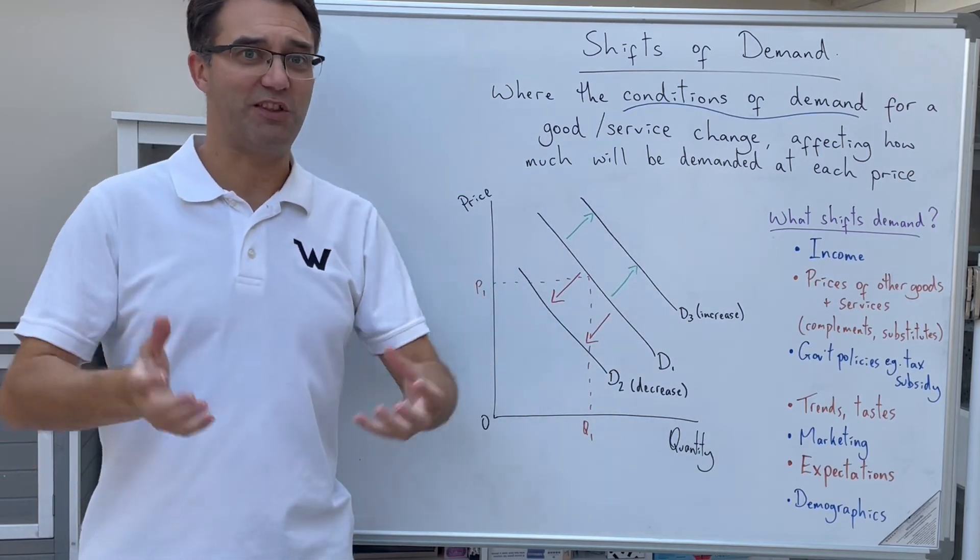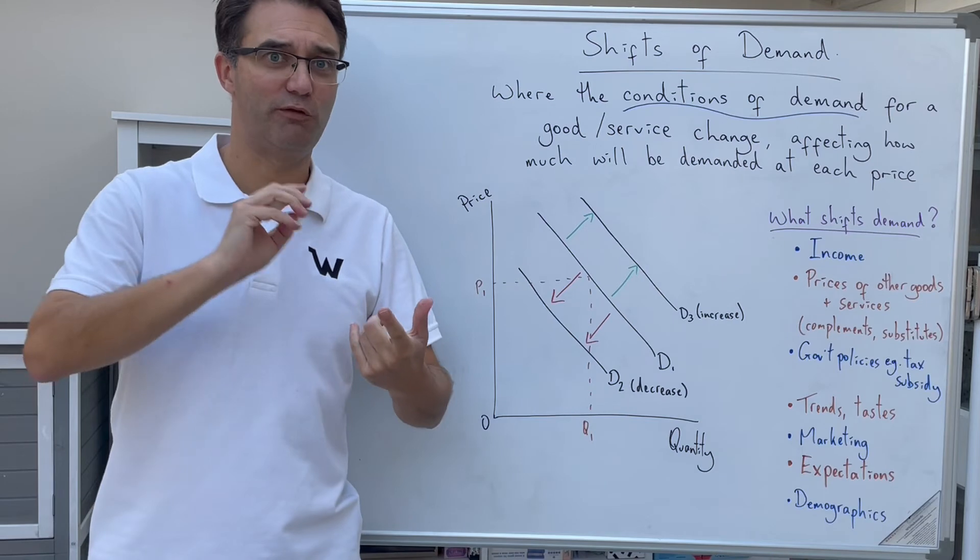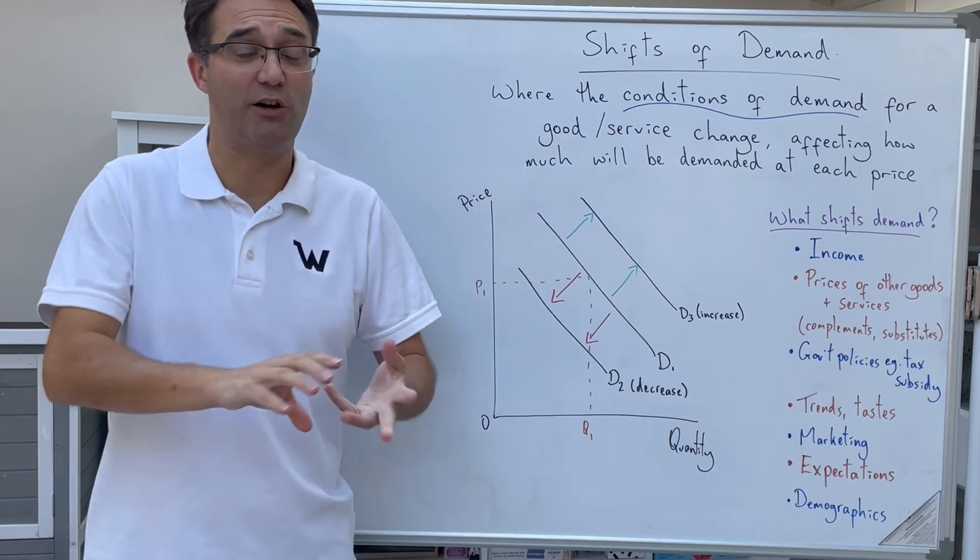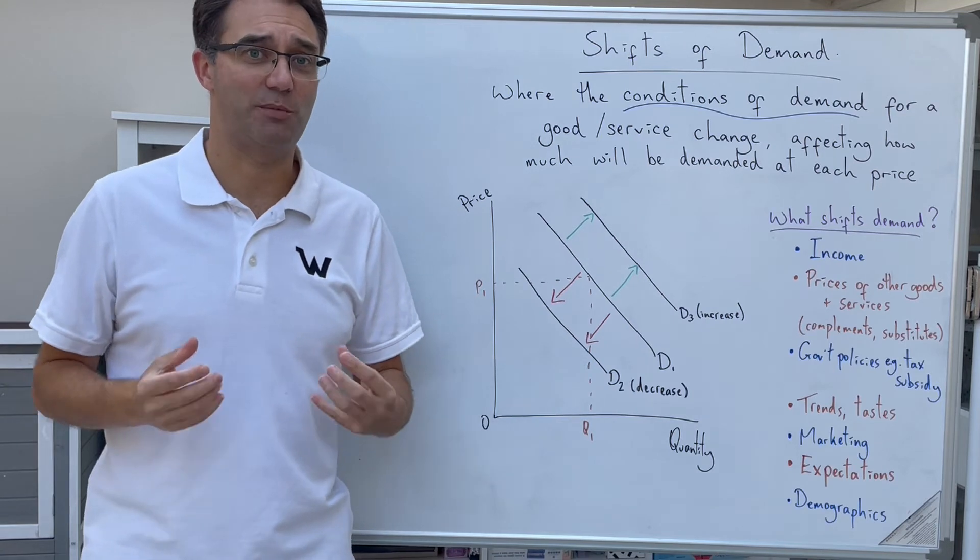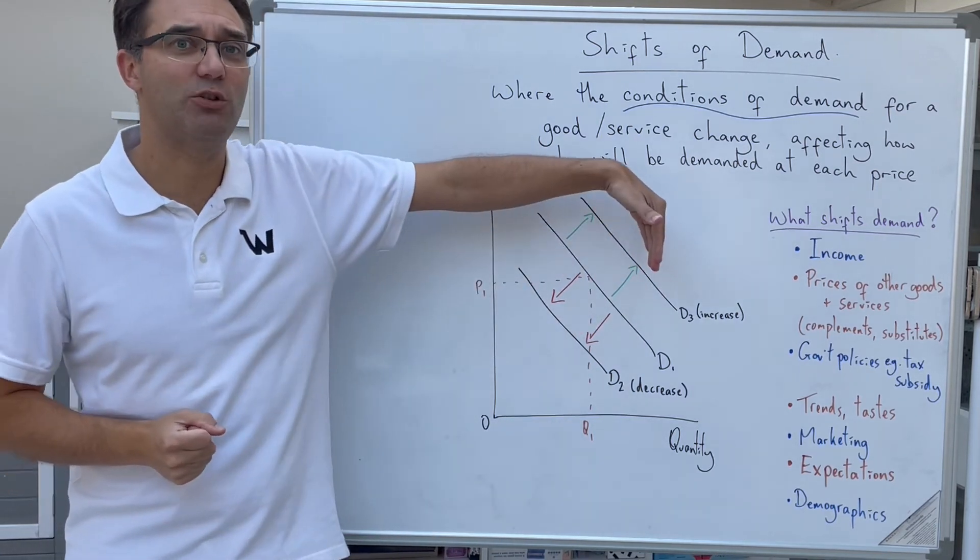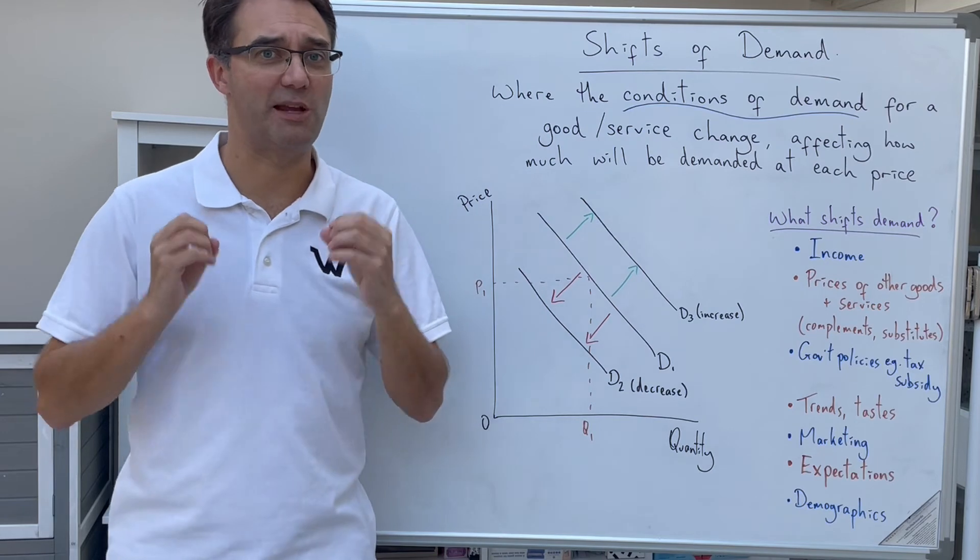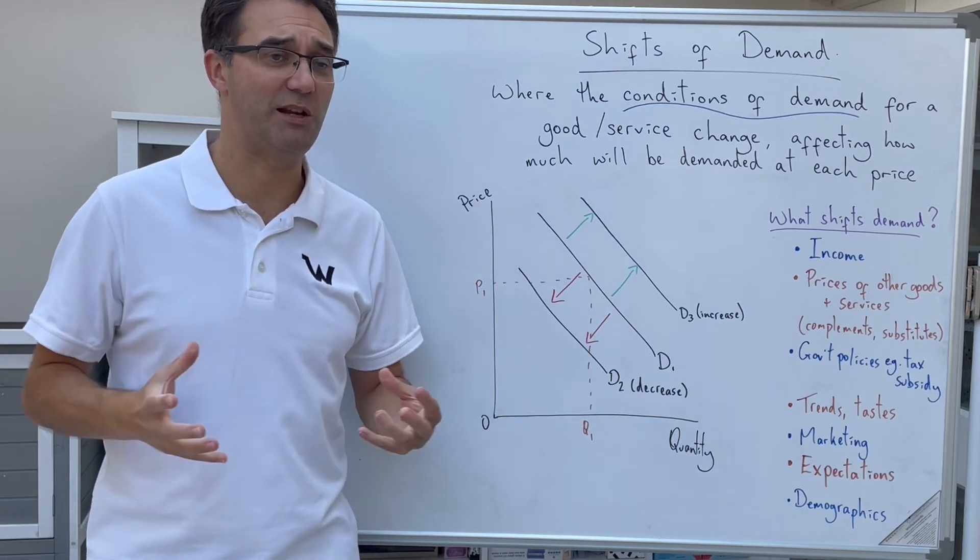If you think back to the start of the pandemic, there were shortages of rice, of pasta, of toilet roll. And a lot of that came not because there was a lack of supply of it, but because the demand had rapidly increased because people thought it might run out in the future or they'd need more of it.